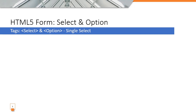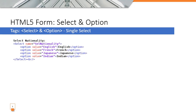Let us look at a select and option using a single select. Here we open a select tag with a closing select tag, and inside it we have multiple option tags. The name attribute is given to the select tag and the value attribute is given to each option tag — this parent-child structure forms the combo box.